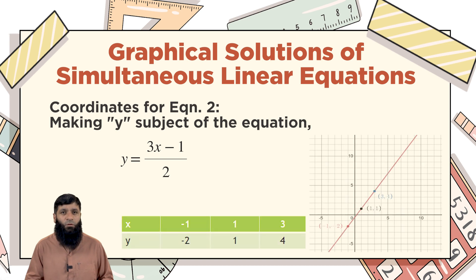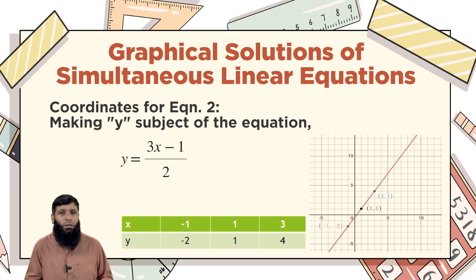Now for the second equation, making y the subject gives y = (3x - 1) / 2. If we substitute x = -1, we get y = -2. If we substitute x = 1, we get y = 1. There is no hard and fast rule for the selection of x values, since x is the independent variable and we can choose any value for it.